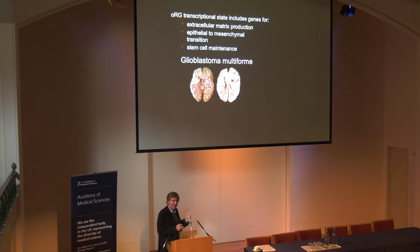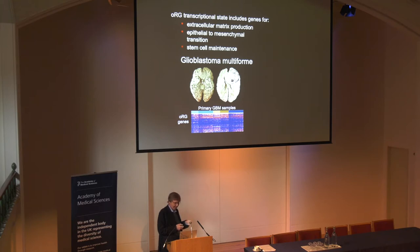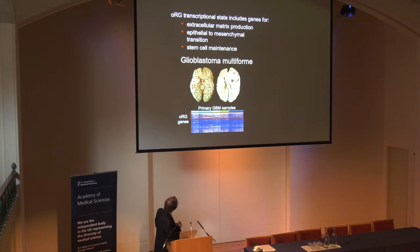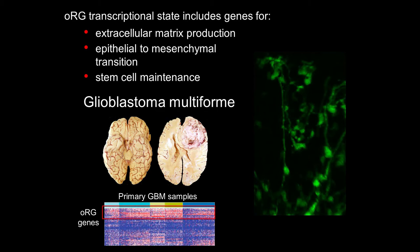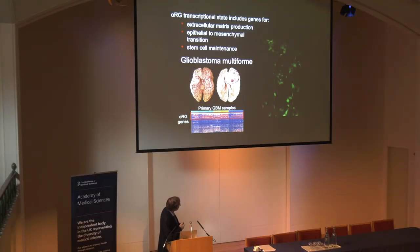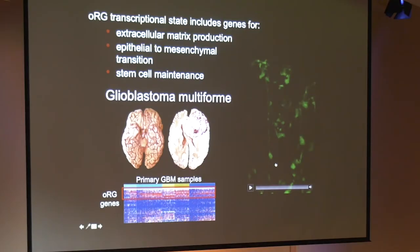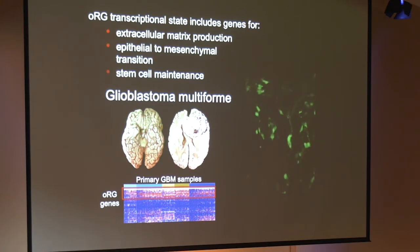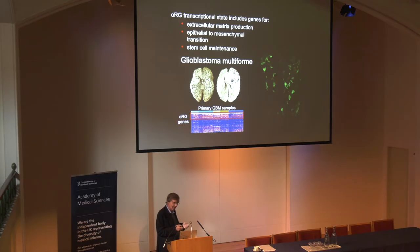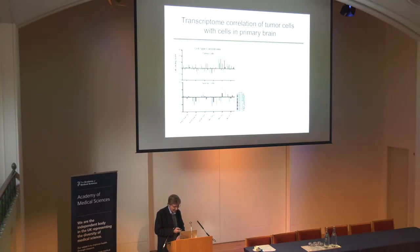These glioblastoma cells seem to have the same gene patterns we found in this one type of fetal progenitor cell. We obtained surgical samples from colleagues at UCSF and used single-cell analysis, finding that the most aggressive form — mesenchymal glioblastomas — had the same gene signatures for outer radial glial cells in their diverse cell population. We took fresh tissue, sectioned, stained, and cultured it with the same markers used in our fetal tissue. In time-lapse images, one cell has the morphology and behavior of these fetal ORG cells. So ORG-like cells appear present in glioblastomas — they look like ORG cells, they behave like ORG cells, and they're molecularly very similar.